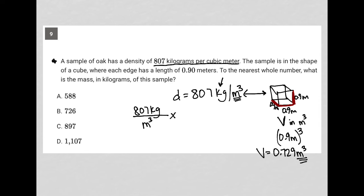I'm going to multiply that by my volume, which is 0.729 M to the third. As long as my units are diagonal from each other, I know that I've made no mistakes here.